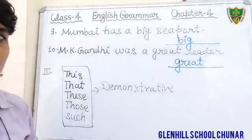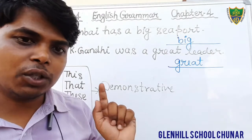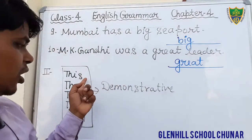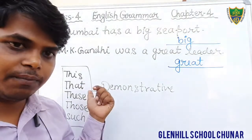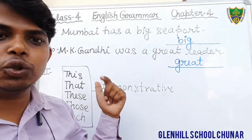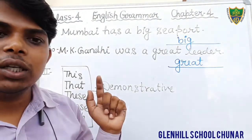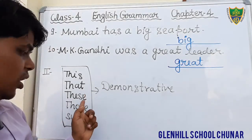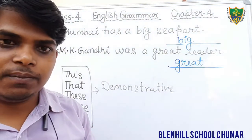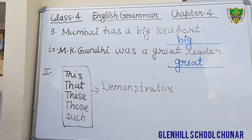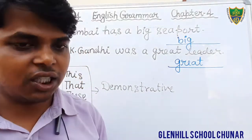The word 'this' is used for singular things and shows nearness. The word 'that' is used for singular things but shows distance. The word 'those' is used for plural things and shows distance. The word 'such' is also used to show something — for example, 'I hate such things' or 'in such a way.'